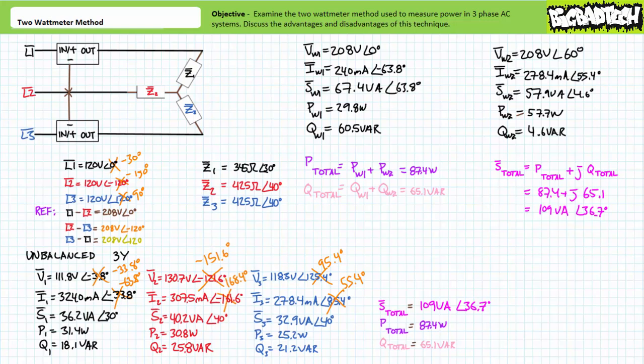Don't necessarily concern yourself too much with referencing and re-referencing for actual implementation of the two-wattmeter method. The only reason we had to do this for this particular illustrated example is because we initially chose L1 as our previous reference. Lacking access to the neutral node, this wouldn't be an option — we'd have to choose something accessible as our reference, in this case line one with respect to line two.